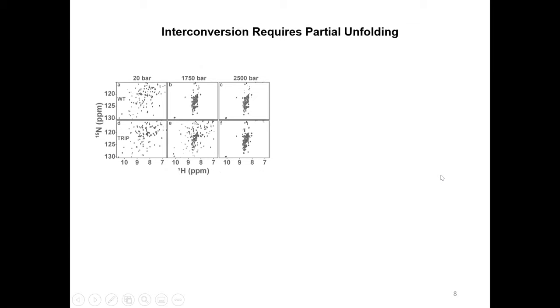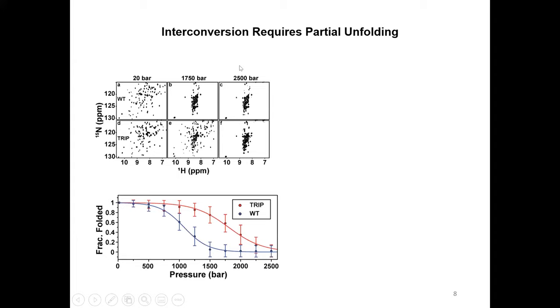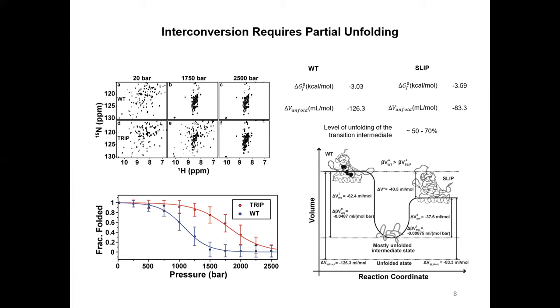We also get information on activation volumes and compressibilities. These values measure the differences between the transition state and the two folded states. The negative signs suggest the transition state is smaller and less compressible than the folded states. How do these values compare to the unfolding volumes? We can lock the protein in the slip conformation using a triple mutation. We can use the wild-type protein and triple mutant to do a pressure unfolding of these two conformations separately with a little help of urea. We can draw the unfolding curves and extract the unfolding volumes of the wild-type and slip protein. By comparing these to the previous numbers, we estimate that the transition state is approximately 50 to 70 percent unfolded.